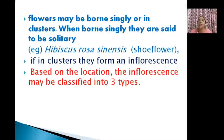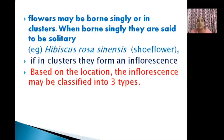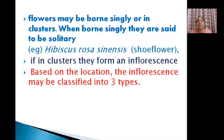Flowers may be borne singly or in clusters. When you look at the shoe flower — hibiscus — it usually occurs singly, so that flower is called a solitary flower. But when you look at Cassia fistula, Kerala's flower Kanikonna, it occurs in clusters — long drooping clusters.